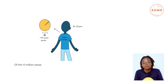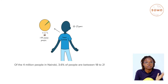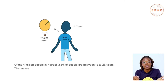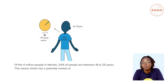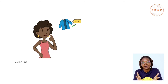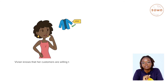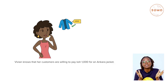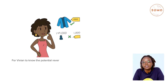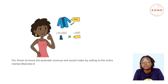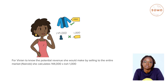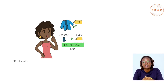Of the 4 million people in Nairobi, 3.6% of the people are between the ages of 18 to 25. This means Vivian has a potential market of 144,000 people. Vivian knows that her customers are willing to pay 1,000 shillings for an Ankara jacket. To know the potential revenue she will make by selling to the entire market in Nairobi, she calculates 144,000 times 1,000. Her potential revenue is 144 million shillings.